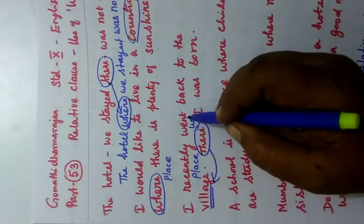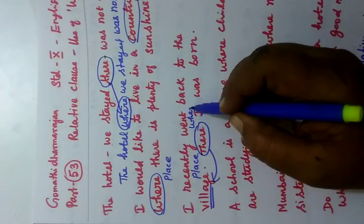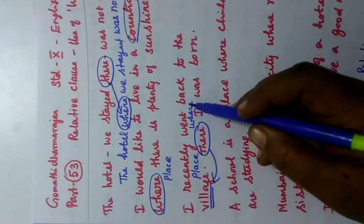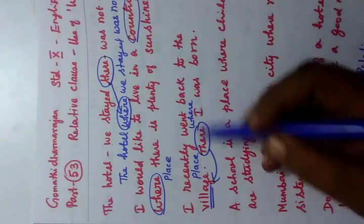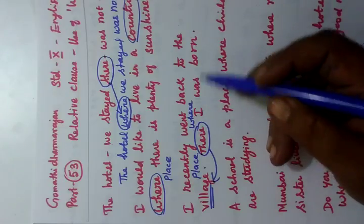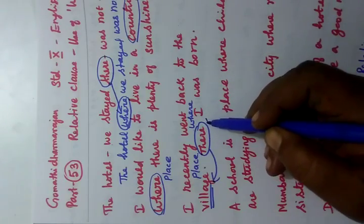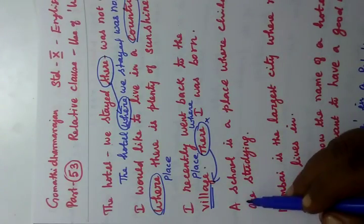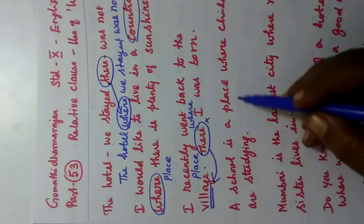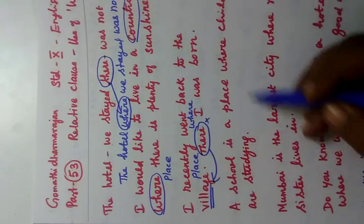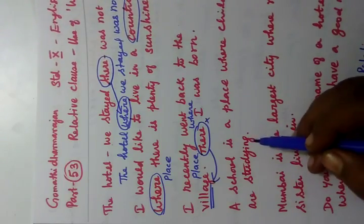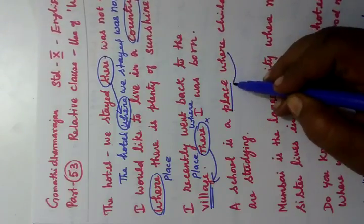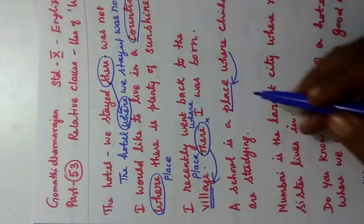Now see the first one. 'Your school is a place where children are studying.' So where you are supposed to use place, we use 'where'.